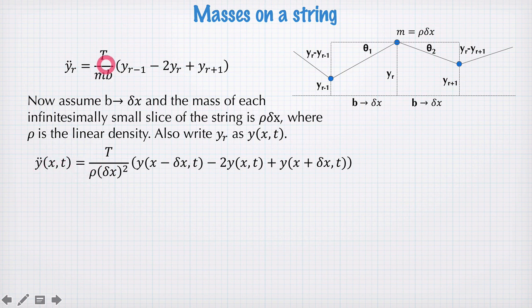So rewriting this equation up here with the new notation, we have the second time derivative, second partial time derivative of y, is equal to T divided by ρ, and we've got δx squared on the bottom here. One factor of δx comes from the mass, the other factor of δx comes from the b. And then we have our y's here,